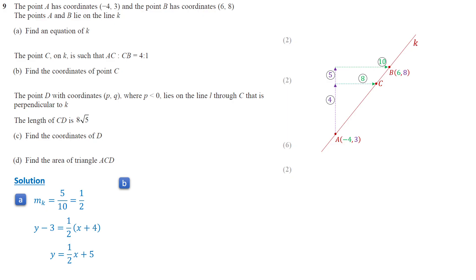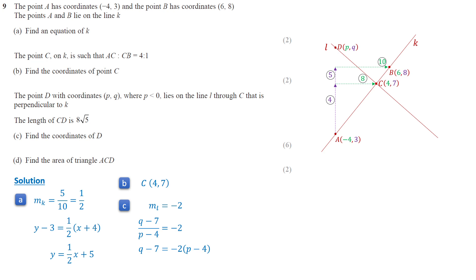This means C is 4 units up and 10 units right from point A, so the coordinates of point C are (4, 7). Line L is perpendicular to line K, so the gradient of line L is negative 2. Since points C and D are on the line, (Q − 7)/(P − 4) equals negative 2, giving Q minus 7 equals negative 2 times (P minus 4). Using the distance formula, CD squared equals (P−4)² plus (Q−7)². The length of CD is 8 root 5, so CD squared is 320.